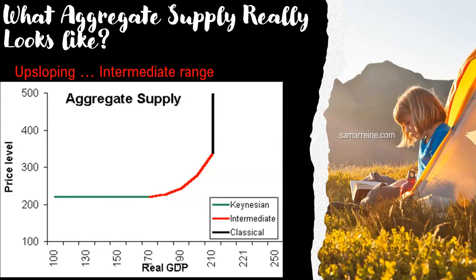Welcome back. This is video 3 for chapter 10, and we're going to take a quick look at what the aggregate supply curve really looks like. The Keynesians say it is horizontal because the price level is fixed or doesn't change. But in a recession, the price level is going to drop and then stagnate — is it exactly constant? That's a severe description.